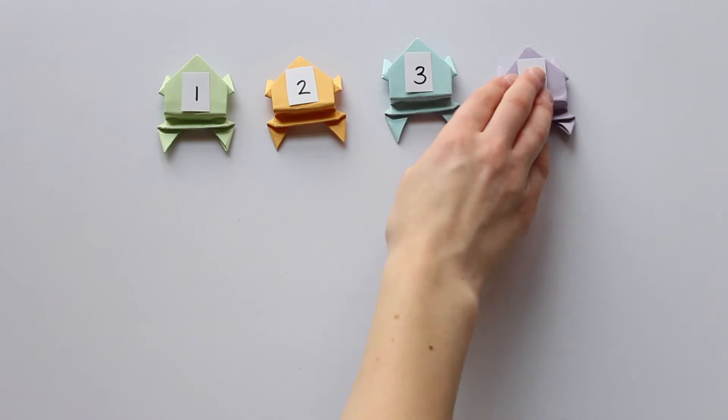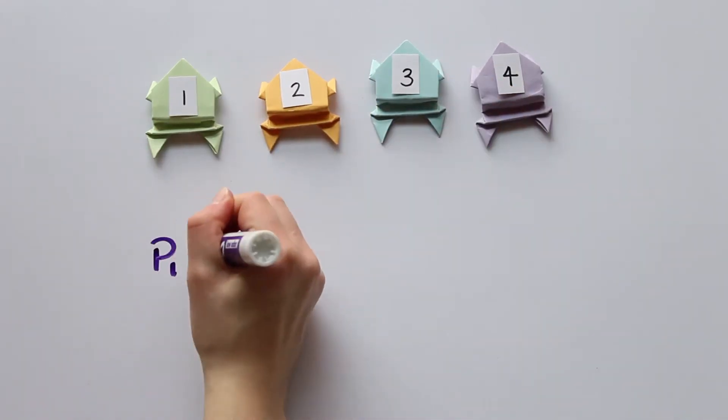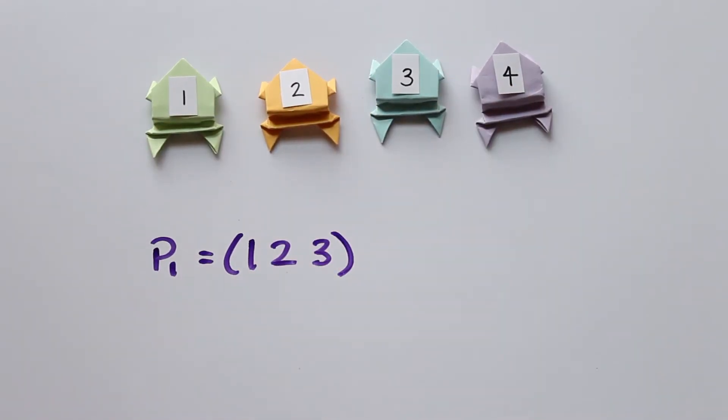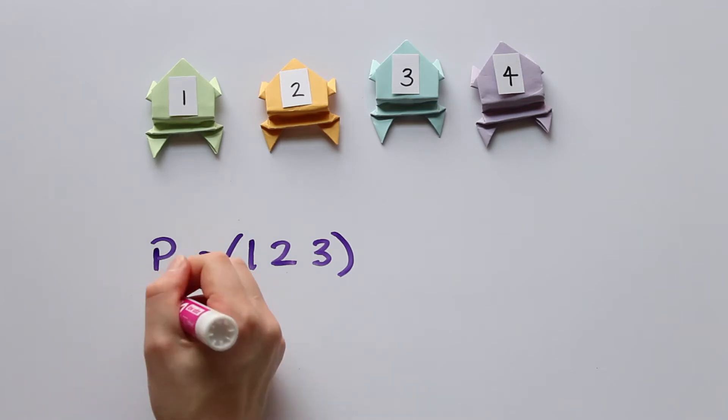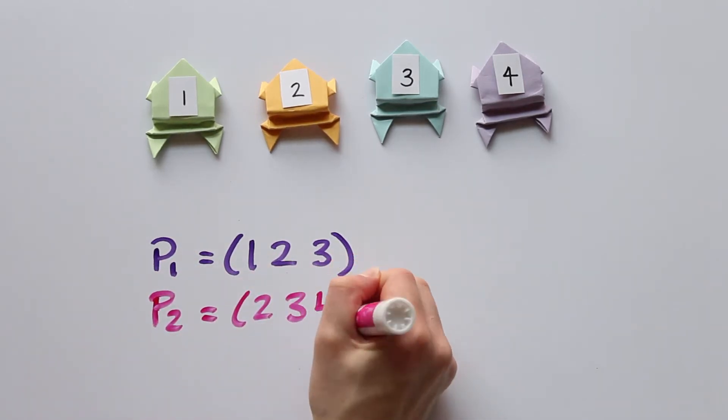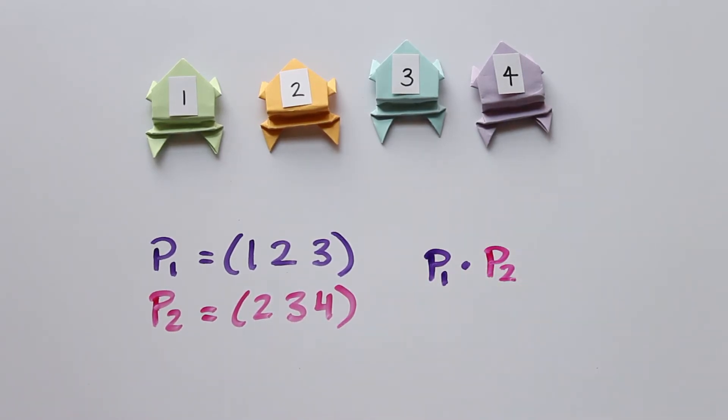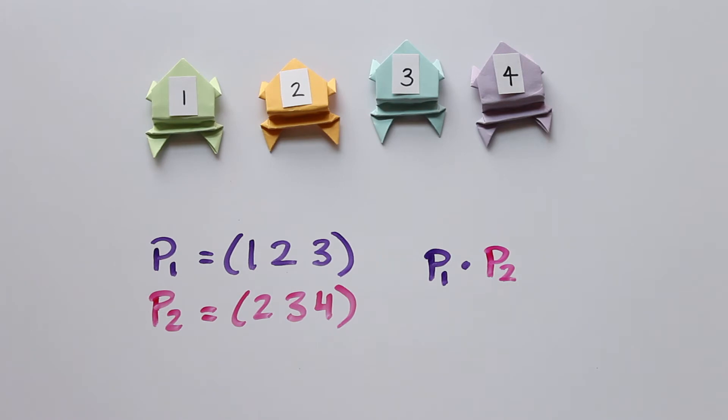Now that we have notation for a single permutation, how do they interact with each other? Remember that permutations form a group. So if we do one permutation and then another, the result should also be a permutation. So let's say that first I want to cycle 1, 2, and 3. And then I want to cycle 2, 3, 4.